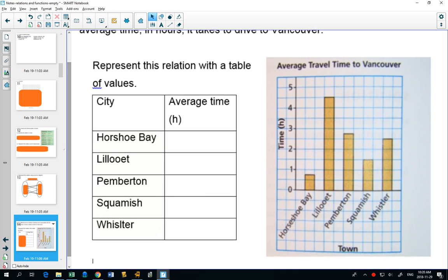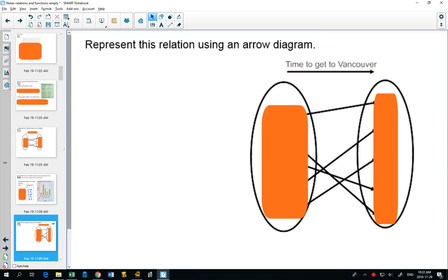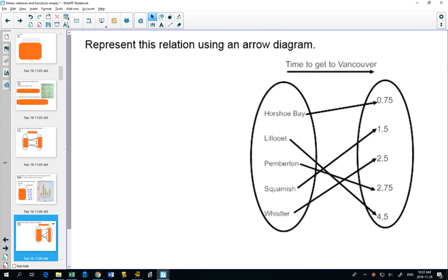Oh, hey, let's check how we did. Horseshoe Bay, 0.75, Lillewitt, 4.5, Pemberton, 2.75, Squamish, 1.5, and Whistler, 2.5. So again, a little description. Time to get to Vancouver. Now, let's go over. I'll be back.